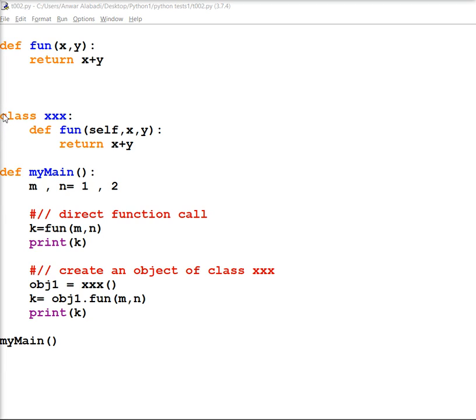So now we have a class. The class is a keyword, the name of the class is xxx, and we have an indentation. We have the same function that we have here, but we can see it has self because the object, like this or me in BASIC.